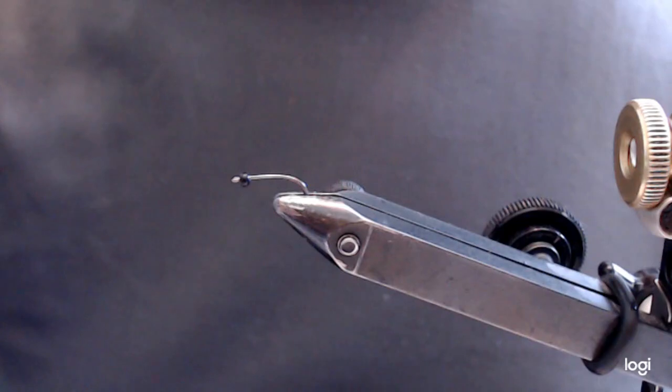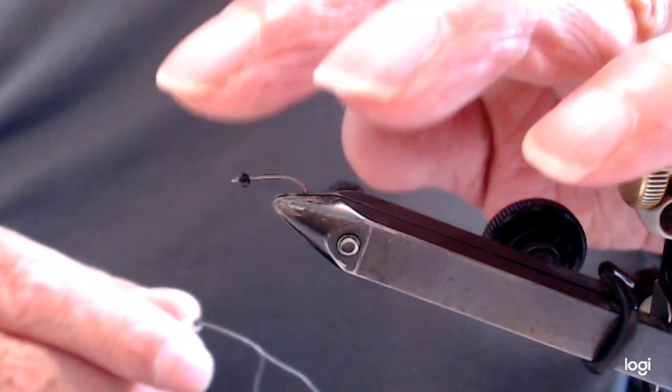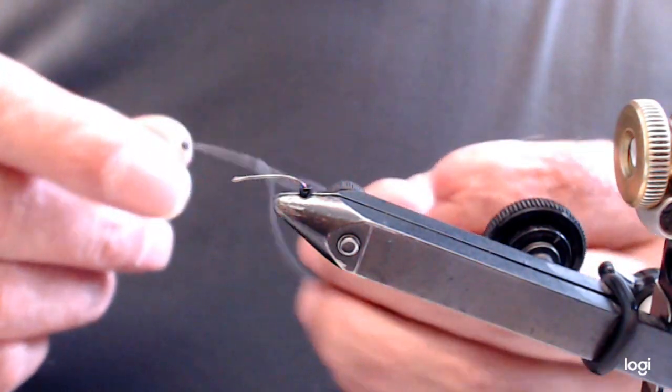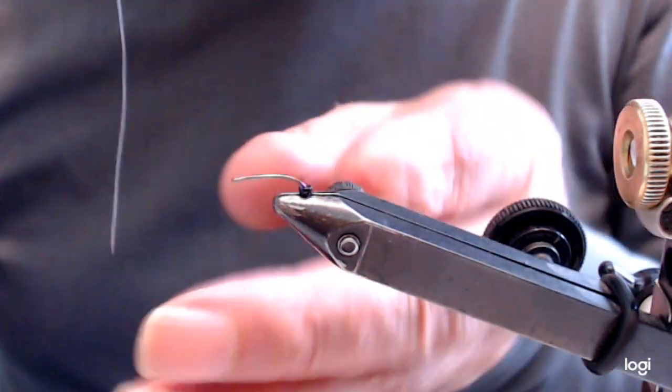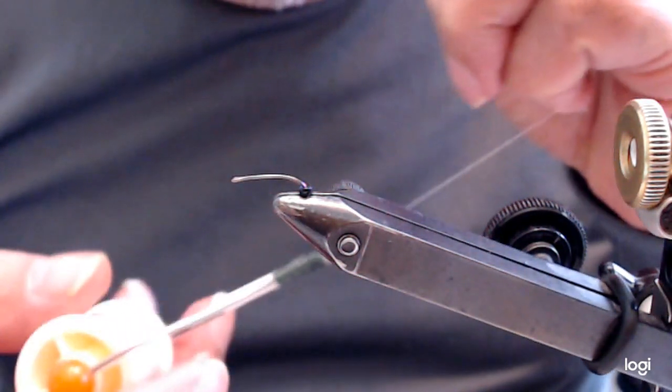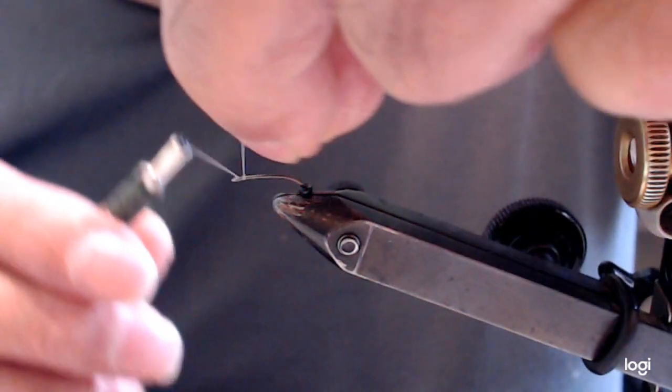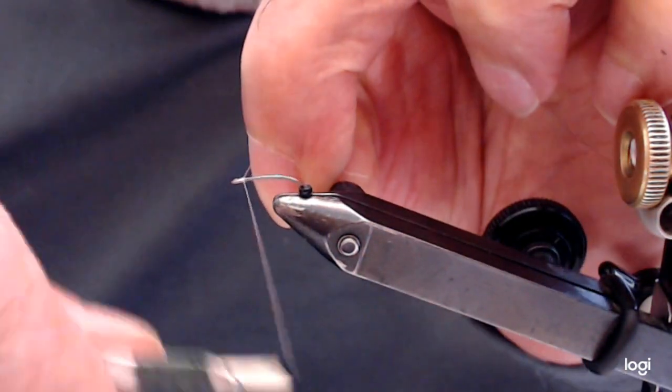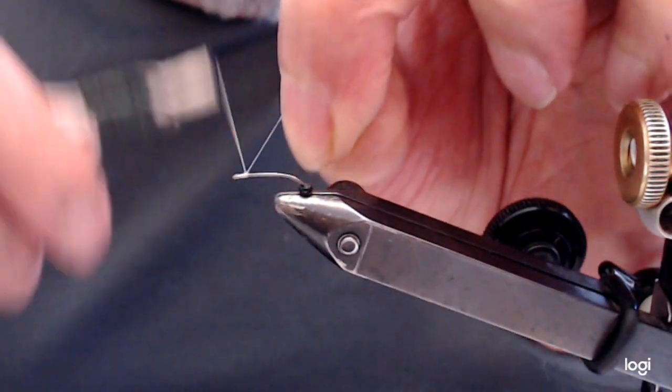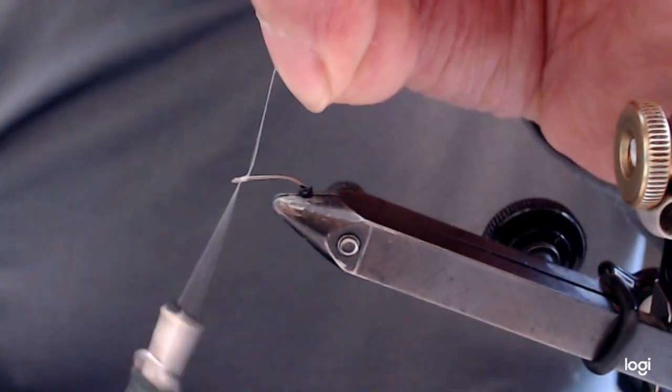First thing I'm going to do is put some gills on it. Slide the bead back. For this I'm going to use white thread, and because it's a 16, my gill is going to be a little sparse.